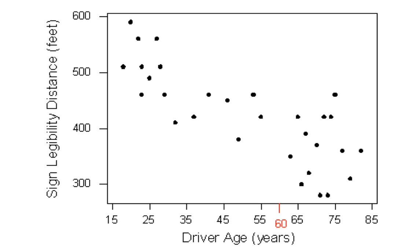Here again is the scatterplot of the driver's ages and maximum distances at which a sign was legible. The age for which an agency wishes to predict the legibility distance, 60, is marked in red.